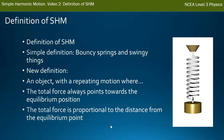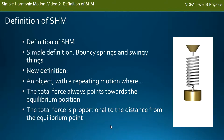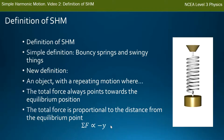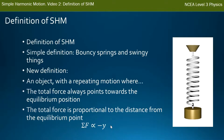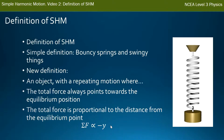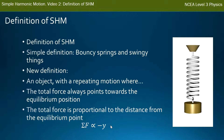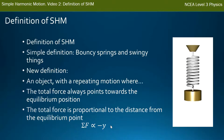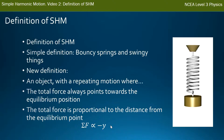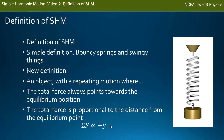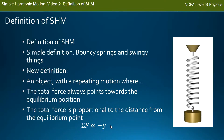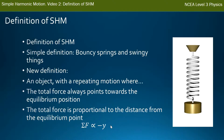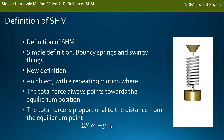We can also write that mathematically. The total force — sigma F — is proportional to negative y, where y is displacement in simple harmonic motion, measuring the distance from the equilibrium point. The negative sign means that as you move in one direction from equilibrium — say downward — the force points back upward, and vice versa. So the total force is proportional to the displacement and always in the opposite direction, pointing back towards the equilibrium point.